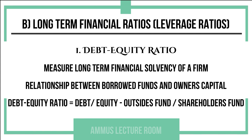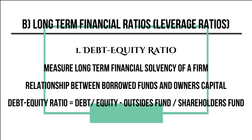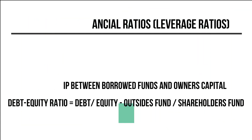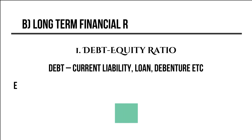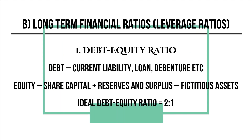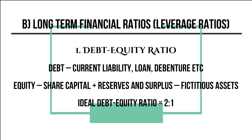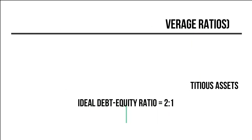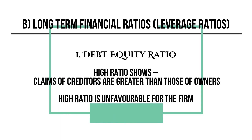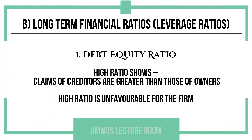One of the long-term financial ratios is the debt-equity ratio, which measures long-term financial solvency. The formula is: debt divided by equity, i.e., outsiders' fund divided by shareholders' fund. Debt includes current liabilities and long-term loans. Equity includes share capital plus reserves and surplus minus fictitious assets. The ideal debt-equity ratio is 2:1.